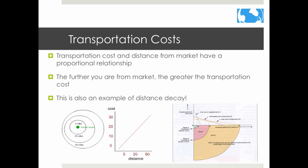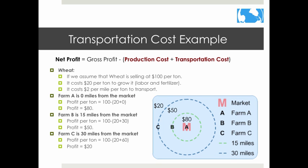Von Thünen came up with both a graphic and mathematical model. Looking at the mathematical model first, we examine the variable of transportation cost, since farmers pay to transport their produce to market. These costs are directly proportional to distance. As shown on the chart, profit for each product declines as a straight line with increasing distance from the market — this is an example of distance decay.